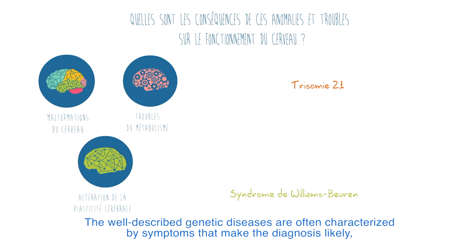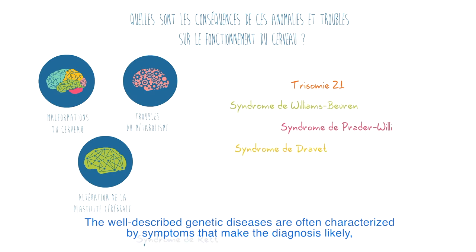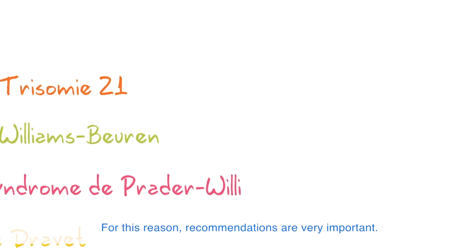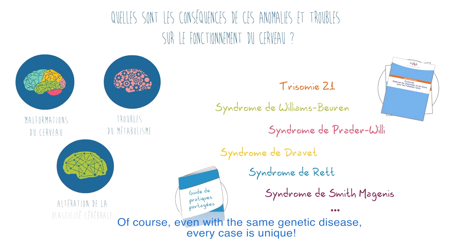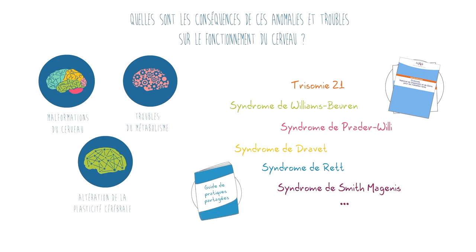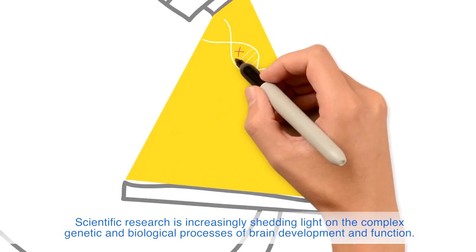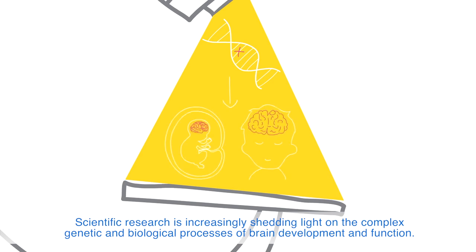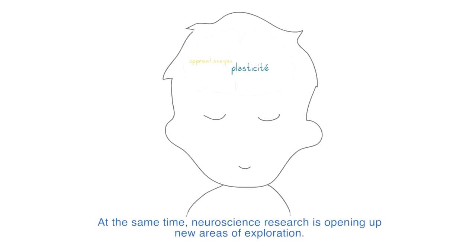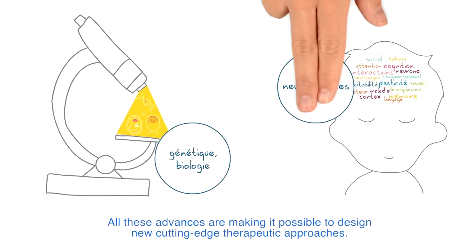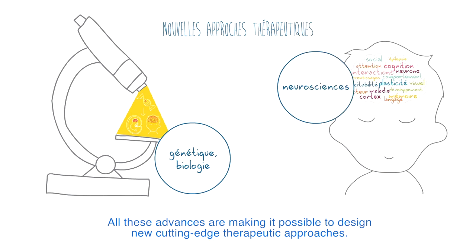Well-described genetic diseases are often characterized by symptoms that make the diagnosis likely and ensure specific medical follow-up. For this reason, recommendations are very important. Of course, even with the same genetic disease, every case is unique. Scientific research is increasingly shedding light on the complex genetic and biological processes of brain development and function. At the same time, neuroscience research is opening up new areas of exploration, and all these advances are making it possible to design new cutting-edge therapeutic approaches.